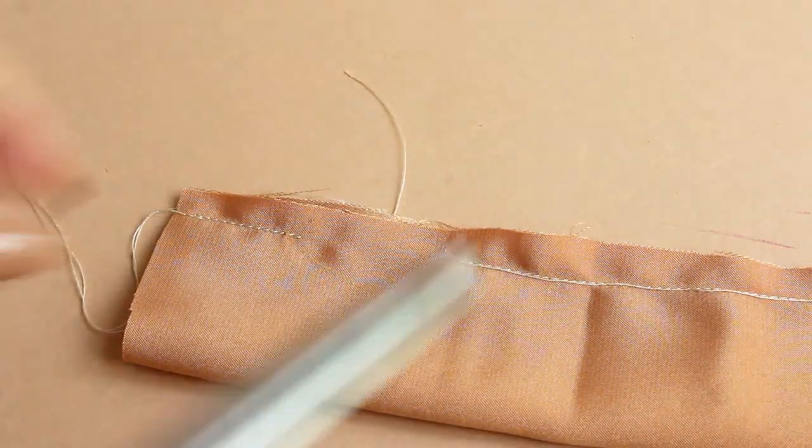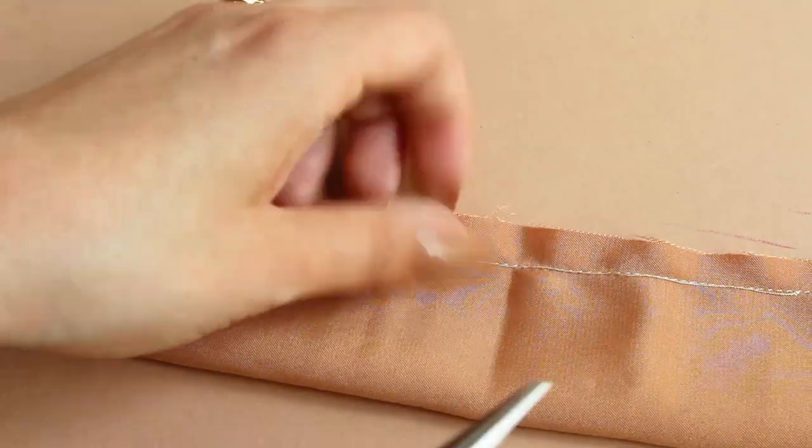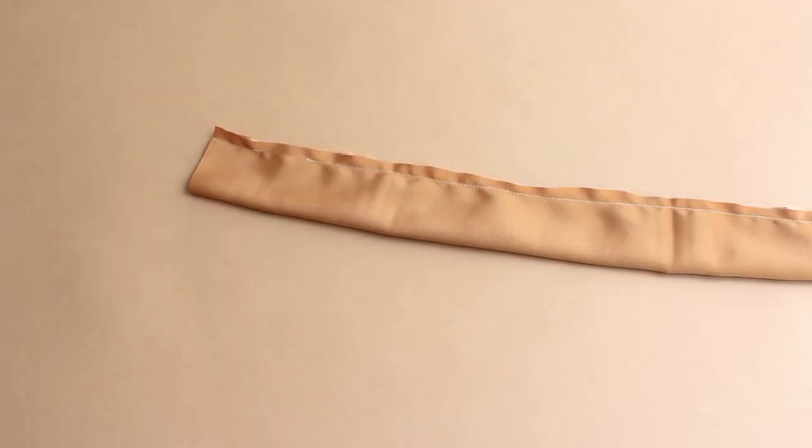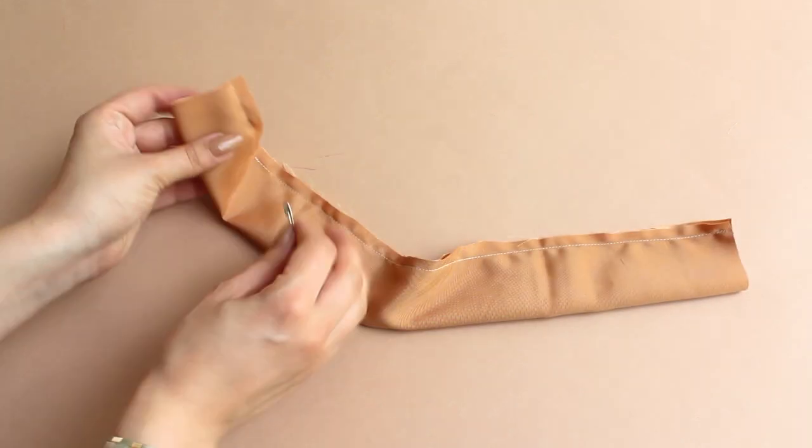Trim all hanging threads. Use a safety pin to turn the scrunchie on the right side.